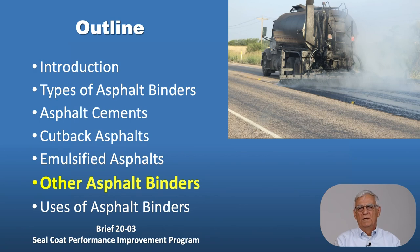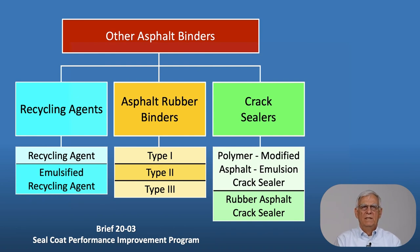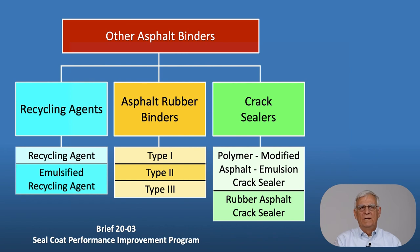There are a few other asphalt binders identified in item 300 of your specification book: recycling agents, asphalt rubber binders, and crack sealers. The recycling agents are used in hot mix hot laid applications to allow higher percentages of RAP in those mixes, and also by some maintenance forces to help develop patching materials out of old RAP stockpiles — in emulsified form as well. The Type 2 and Type 3 asphalt rubber binders are primarily used in seal coat applications and some hot mix applications, and there are a variety of crack sealers made with polymers and asphalt rubber materials.